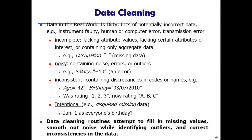Data in the real world is dirty. Dirty means lots of potentially incorrect data. Incorrect data comes from instrument faults, human or computer errors, and transmission errors. Data is also incomplete — lacking attribute values, lacking certain attributes of interest, or containing only aggregate data. For example, an occupation field where no value is filled is missing data. Noisy data contains errors or outliers — for example, a salary that is a negative number is wrong information and is an error.